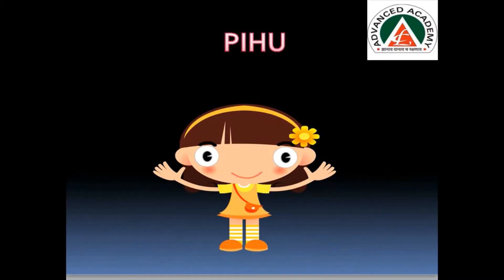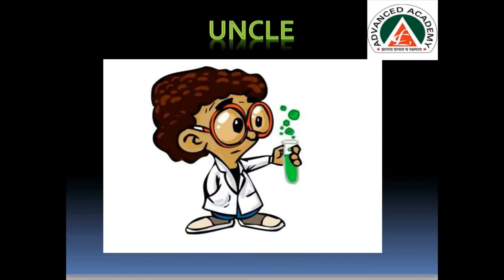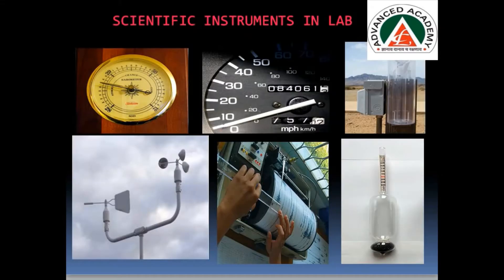Once there was a girl. Her name was Pihu. And her uncle was a scientist. So she went to her uncle's lab to meet him. There she saw so many scientific instruments and got confused. She asked her uncle, 'What are these?'